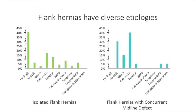The etiologies of flank hernias were diverse. Isolated defects most frequently resulted from urologic surgeries, while flank hernias with a concurrent midline defect most frequently resulted from colorectal and liver surgeries.